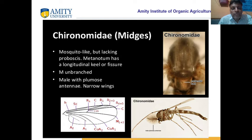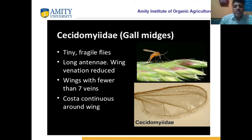Another group is midges. Their family is called Chironomidae. Chironomidae looks like mosquitoes but they are not mosquitoes — they have no proboscis and no maxillary palpi. The metanotum has a longitudinal keel or ridge. Males have plumose-type antennae. Gall midges also cause disease in plants. They are tiny fragile flies with very reduced wing venation — fewer than seven veins.